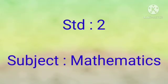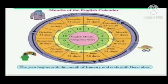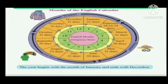Standard Second Subject Mathematics, Chapter 20: Twelve Months in a Year. Children, do you know that there are twelve months in the English calendar? The year begins with the month of January and ends with December. Now, children, let's read the months.